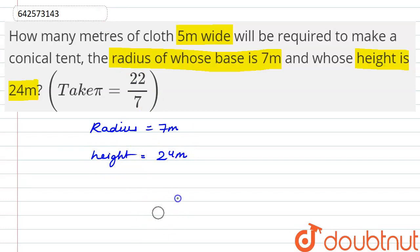Okay, so we are given that the radius is 7 meters and the height is 24 meters. So we know that the curved surface area of cone is πrl. Okay, so we have to find the slant height l.